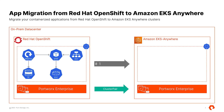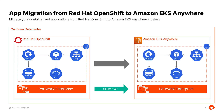We perform the migration by defining a migration specification and applying it using a YAML file against our source cluster. As part of the migration, Portworx will move not just the persistent volumes but all Kubernetes objects from the source to the destination cluster, and deploy them automatically on your Amazon EKS Anywhere cluster.